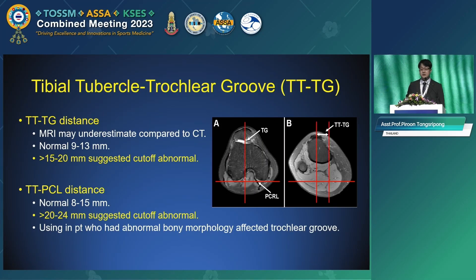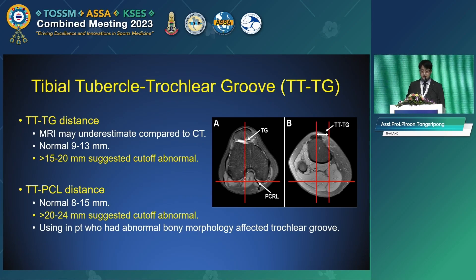Regarding the tibial tubercle to trochlear groove (TT-TG) distance, MRI may underestimate by 3.8 mm compared to CT scan. The normal range is 9 to 30 mm, with more than 15 to 20 mm suggested as the cut-off for abnormal. The TT-PCL distance is also used in patients with abnormal bony morphology affecting the trochlear groove, with a normal distance of 8 to 15 mm and more than 20 to 24 mm considered abnormal.